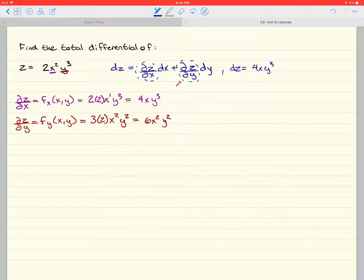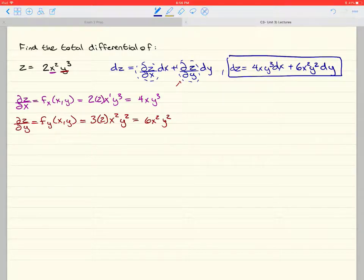4x y cubed dx, plus 6x squared y squared dy. And there is our total differential. Now,